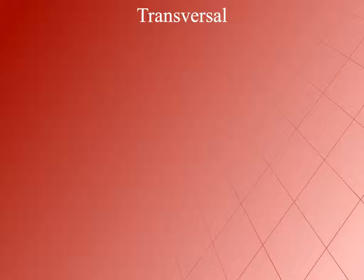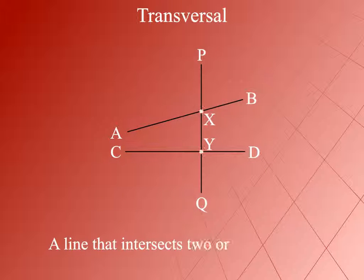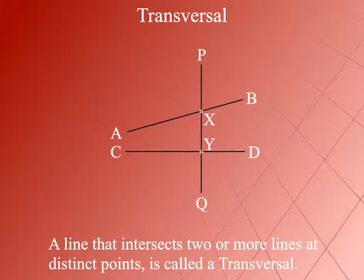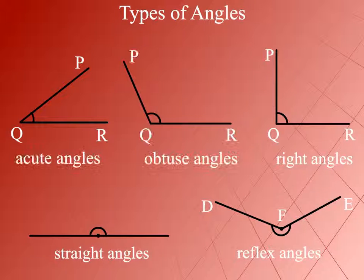Transversal. AB and CD are two lines in the same plane. PQ intersects AB at X and CD at Y. Here, the line PQ is called a transversal to the lines AB and CD. A line that intersects two or more lines at distinct points is called a transversal.